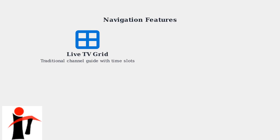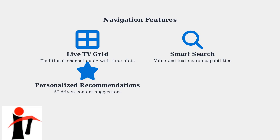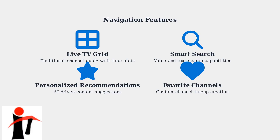Now that you're logged in, let's explore the main navigation features of Xfinity Stream. The interface is designed to be intuitive and user-friendly. The Live TV grid provides a traditional channel guide layout with time slots, making it easy to see what's currently playing and what's coming up next. The search functionality allows you to find content quickly using both voice and text search across live TV and on-demand content. Personalized recommendations use AI to suggest content based on your viewing history and preferences, helping you discover new shows and movies. You can manage your favorite channels to create a custom lineup, and parental controls allow you to set content filtering and viewing restrictions for different family members.